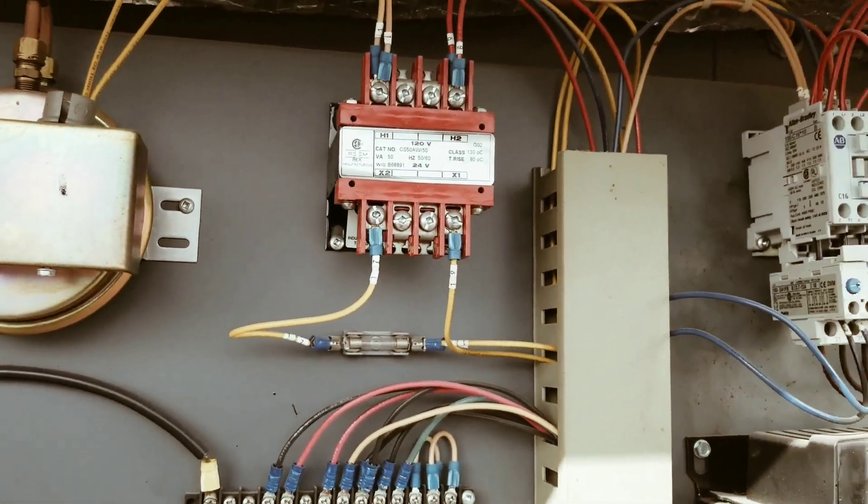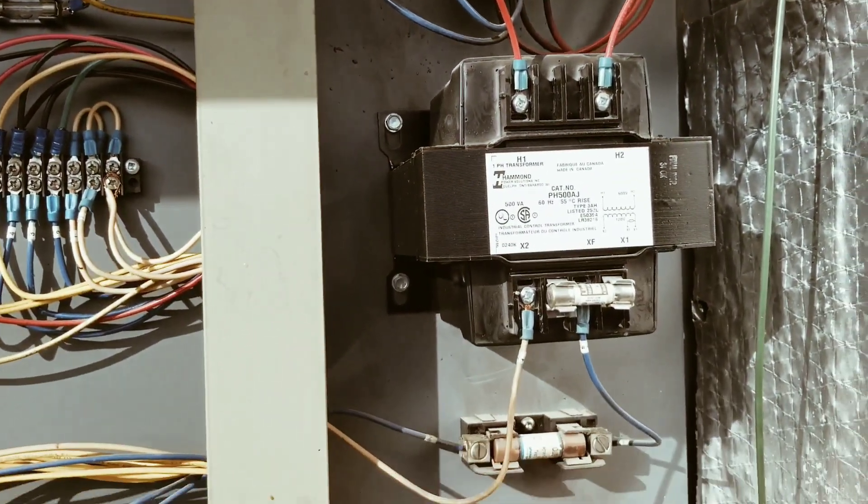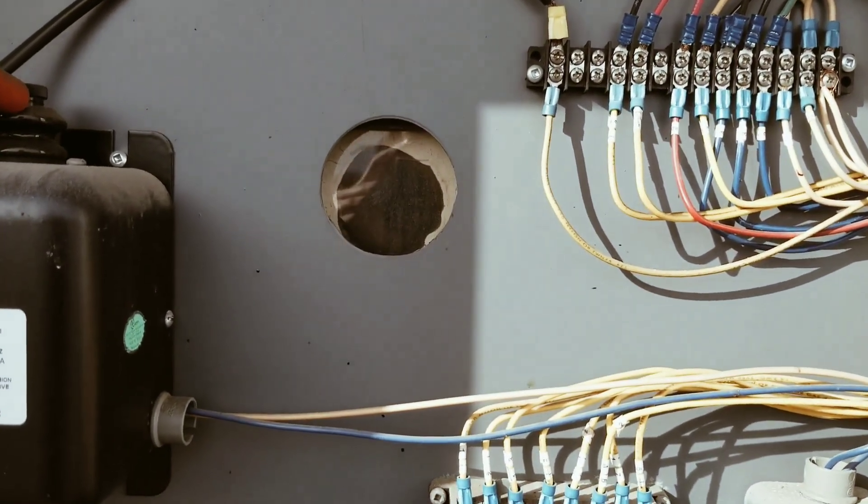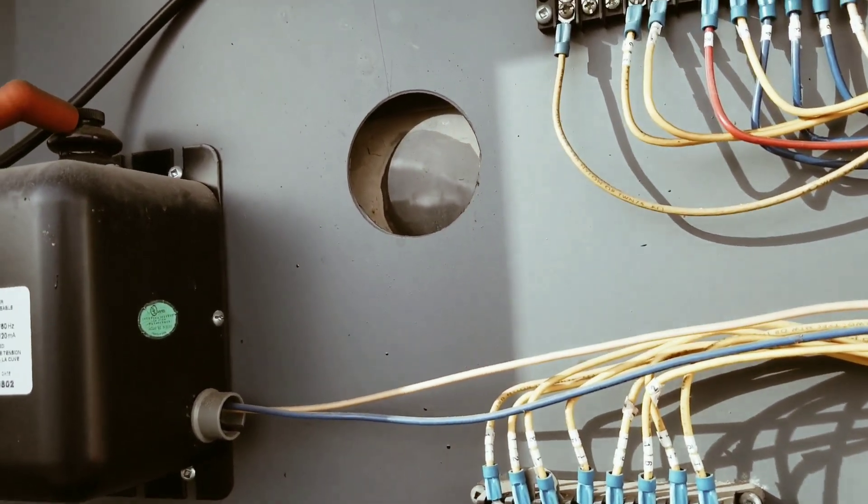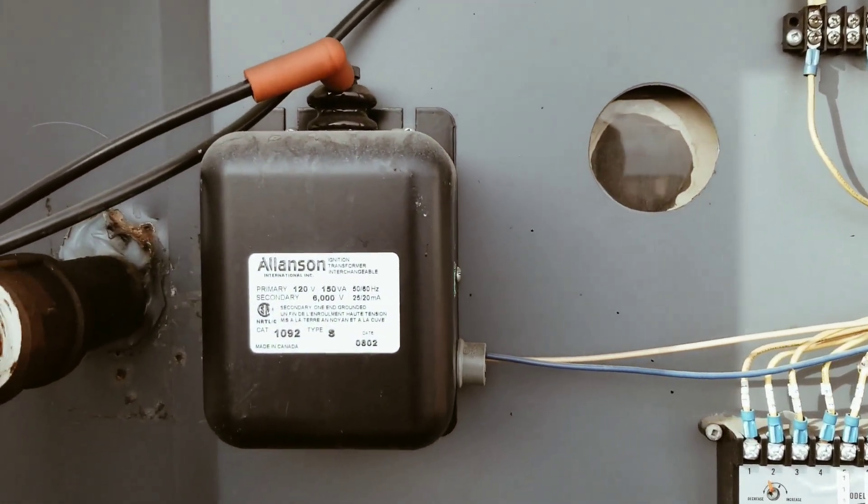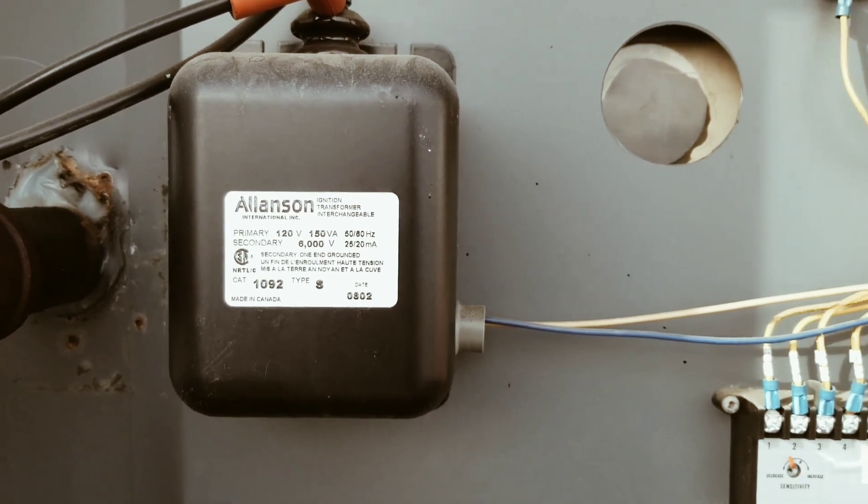We have a transformer. We have the contactor for the blower. Another transformer. This is a sight glass into the burner. It's really difficult to see and I'm not going to get close enough with the camera to give you a snapshot of the inside. But that is the ignition transformer. That's where we get the ignition from, the spark.